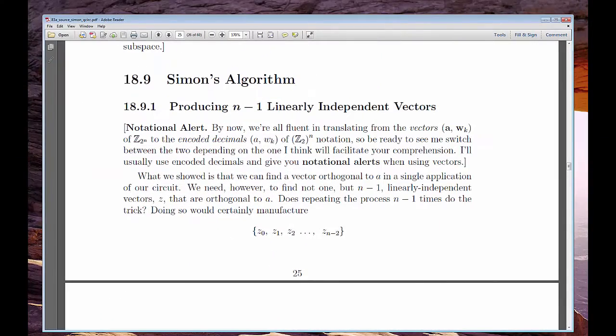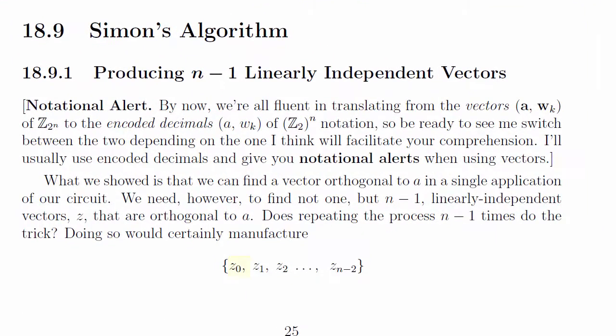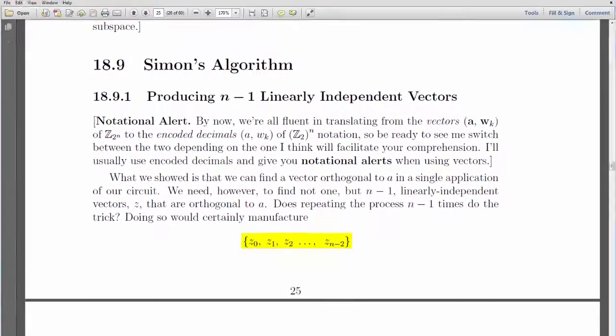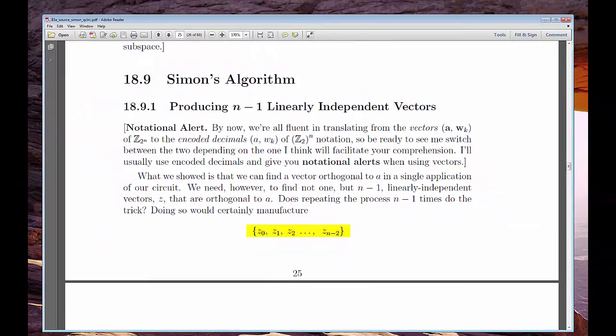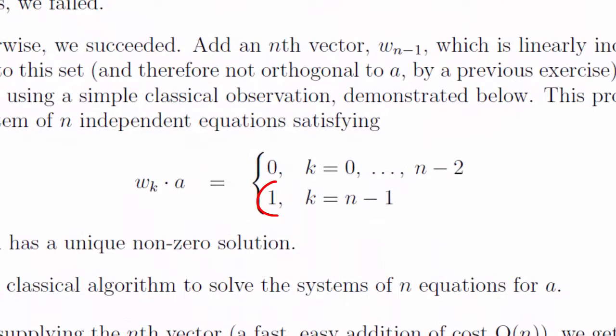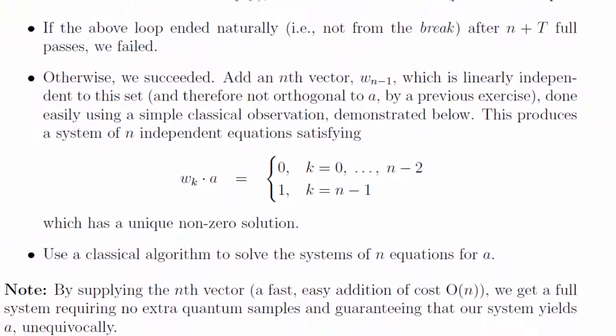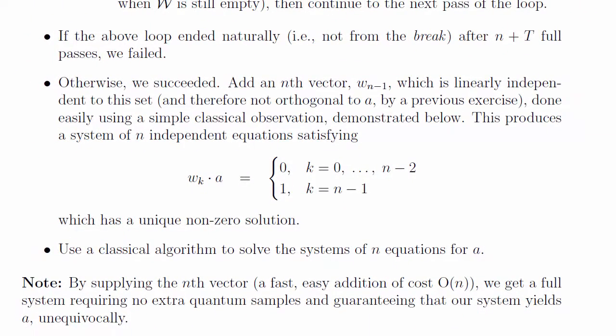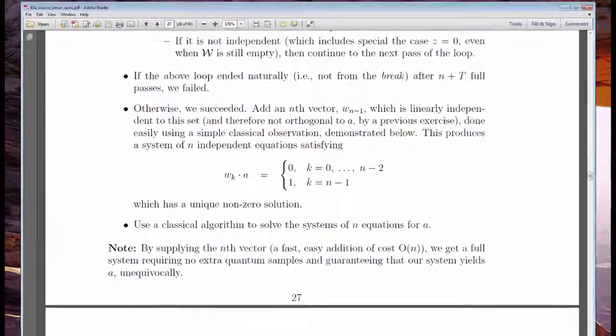Then, we get to the big algorithmic step. We'll repeat this task several times, continuing to generate new mod 2 vectors orthogonal to A until we've collected n-1 of them. We'll add one more vector to that collection, this one not orthogonal to A, producing n equations and n unknowns. Those unknowns are nothing other than the coordinates of our sought-after period A, and after an easy solve, we've nailed it.